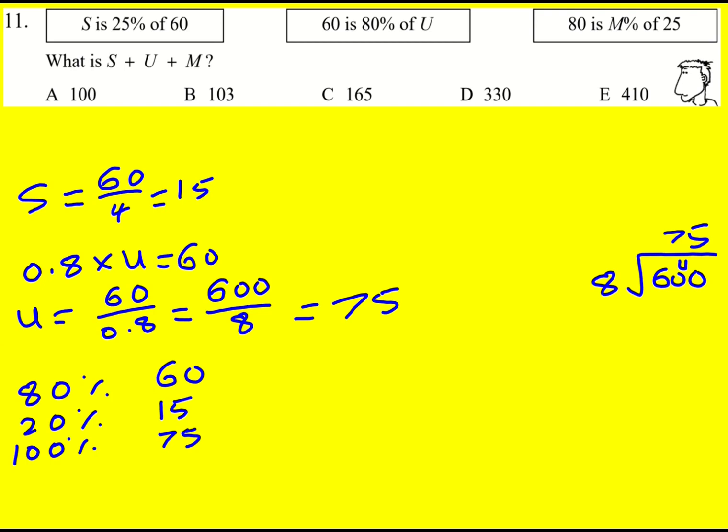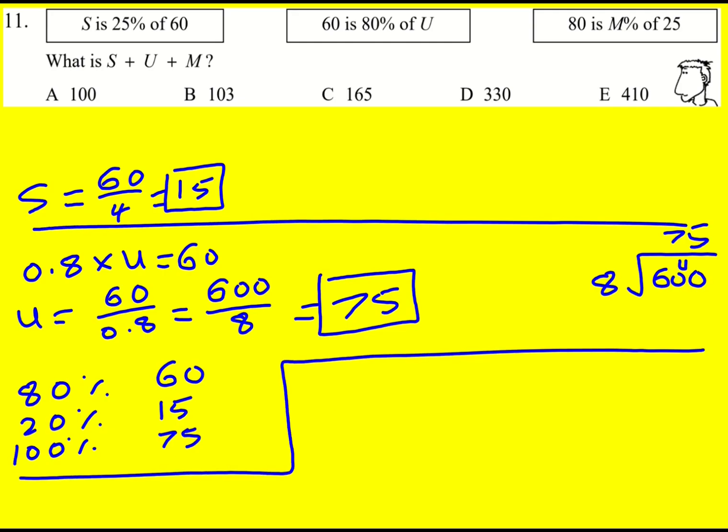So we've got 15 and 75. And then finally, 80 is M percent of 25, so that is M over 100 times 25, essentially. That's how I found 25% - I just do 25 over 100 times 60. It's just 25 over 100 as a quarter.